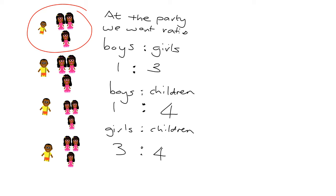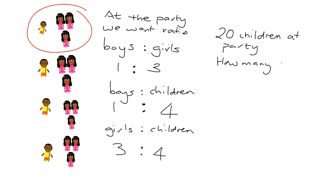From a single ratio we can get two other ratios, and this allows us to answer questions like: how many girls? All we have to do is use the right ratio. The ratio that relates girls to children is 3 to 4. We know that in every group of four children we want three girls, and we want 20 children at the party.